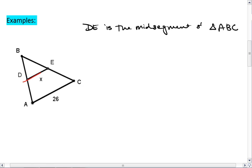Okay, mid-segment DE, this means that the length of DE is going to be half the length of AC. X is 13.